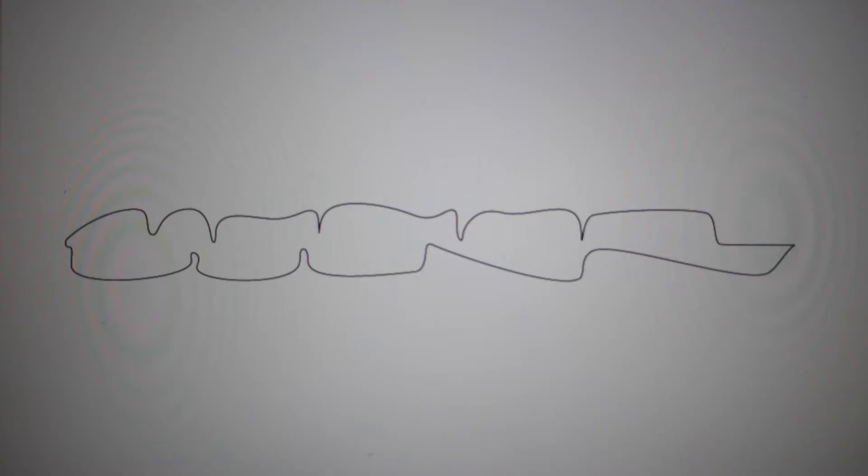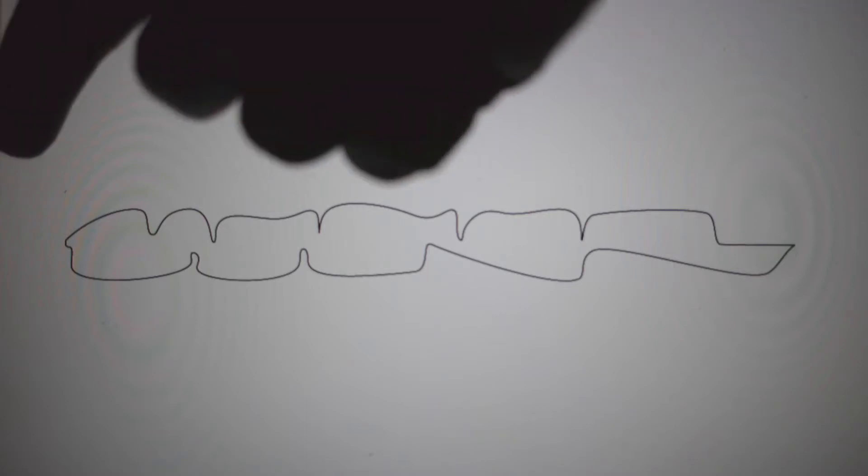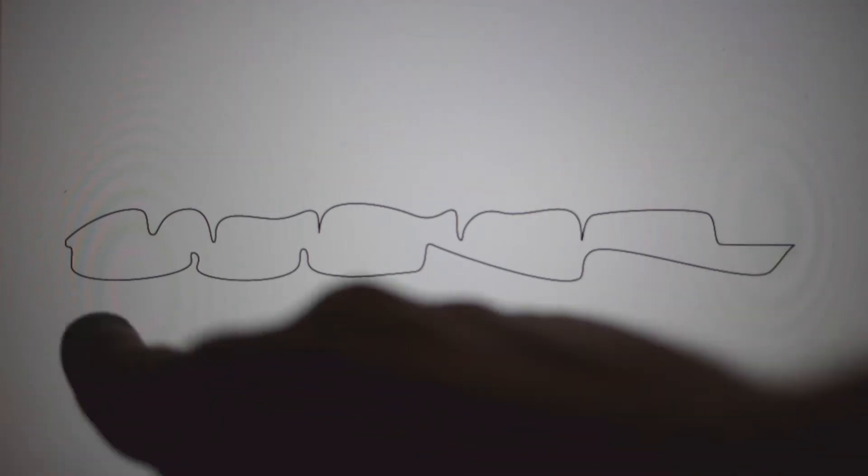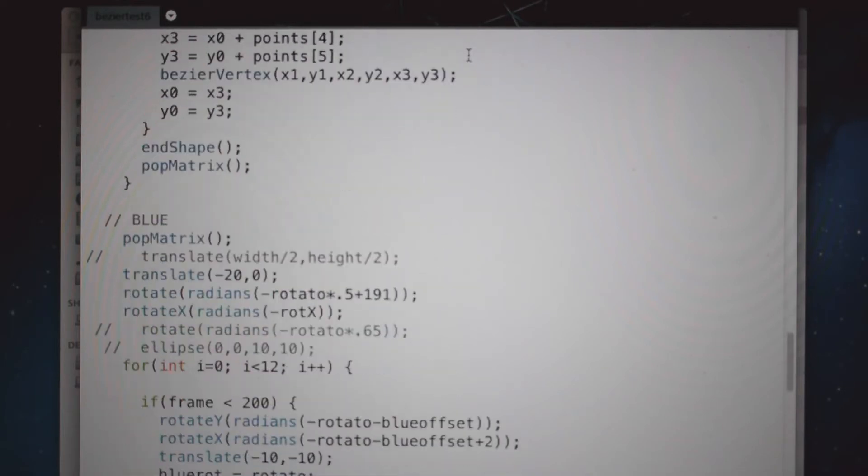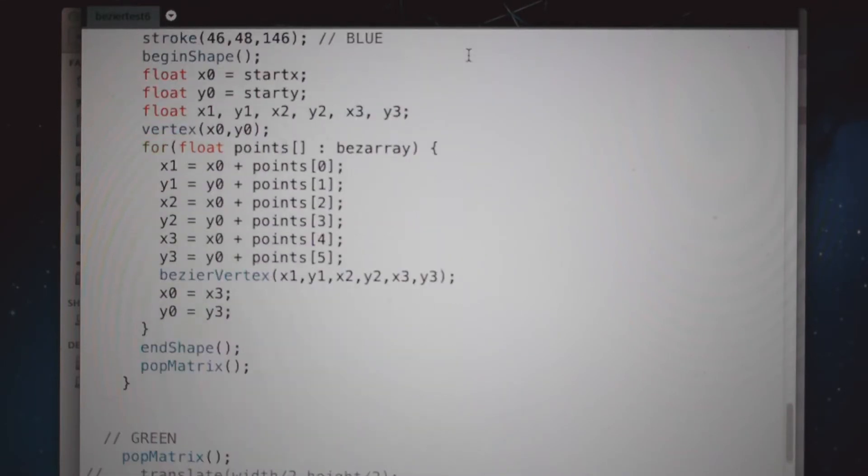So I started out with this abstracted version of the audio waveform of the whole record. This is side A, and this is side B. And then I built a program in Processing to manipulate and animate the curves in 3D space.